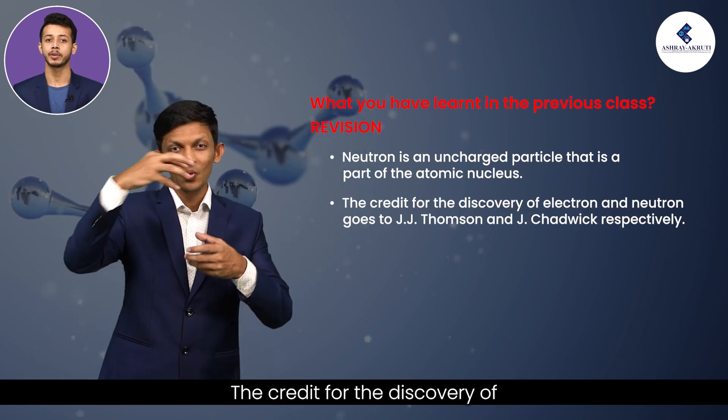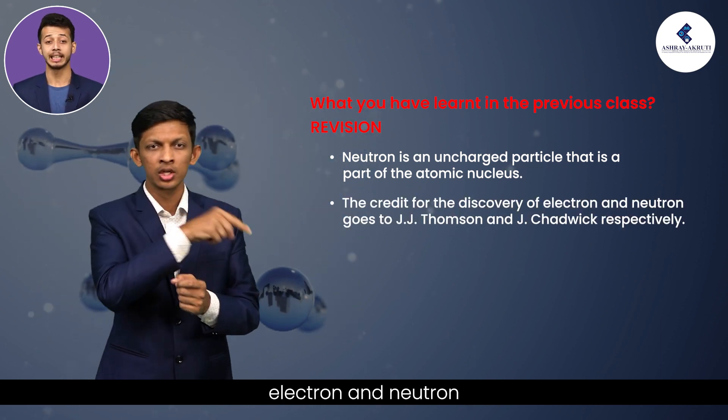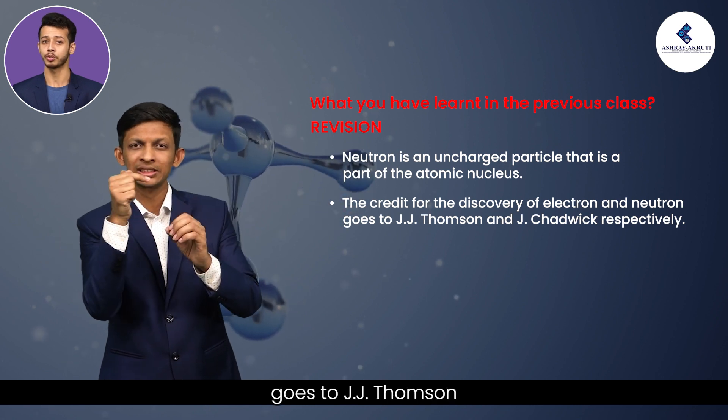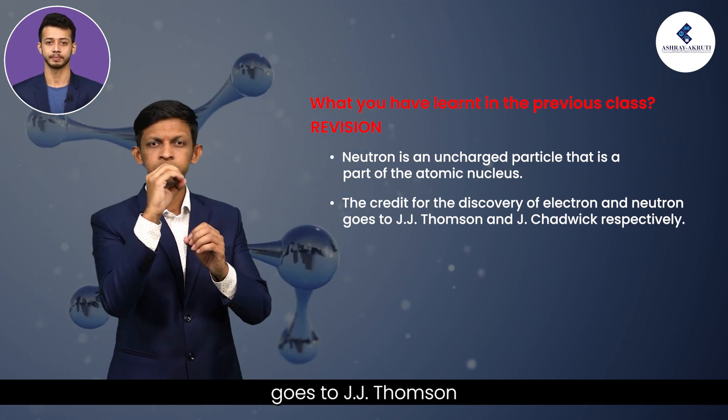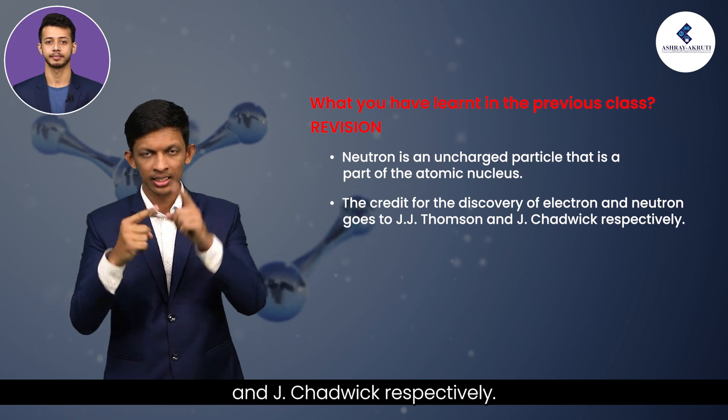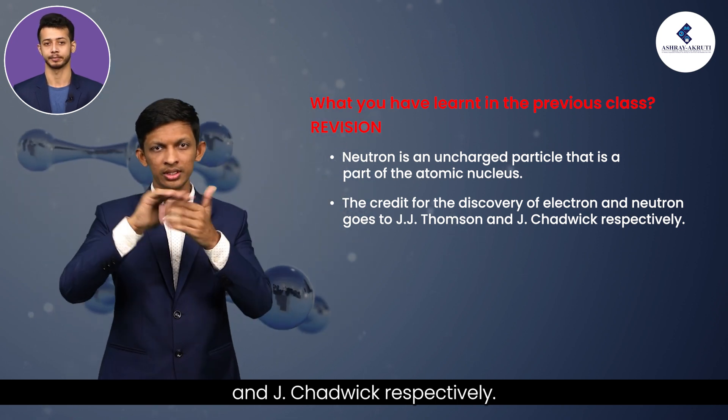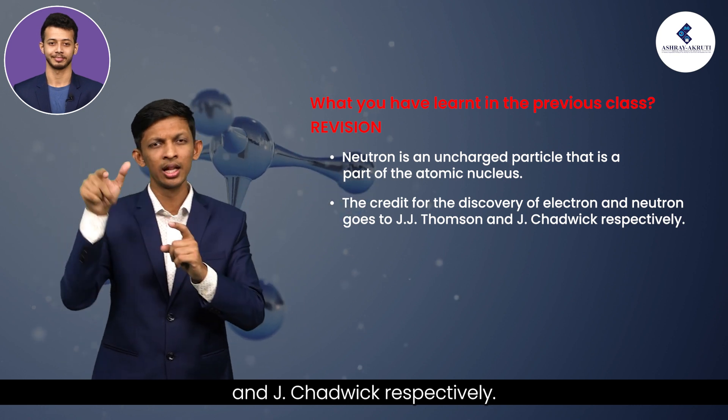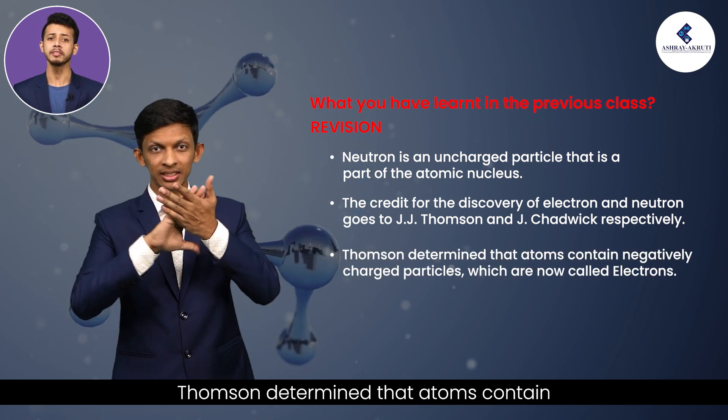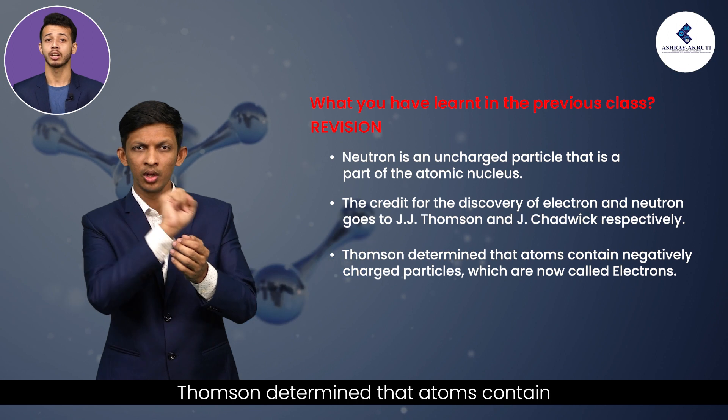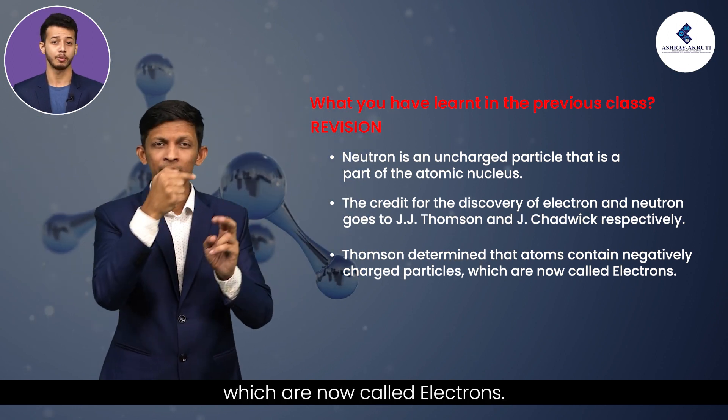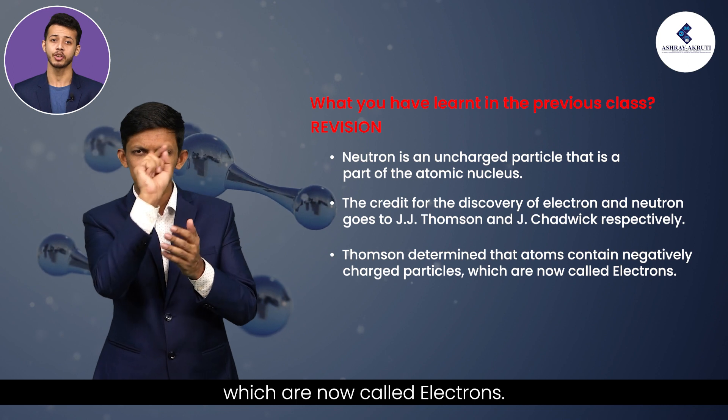The credit for the discovery of electron and neutron goes to J.J. Thomson and J. Chadwick respectively. Thomson determined that atoms contain negatively charged particles which are now called electrons.